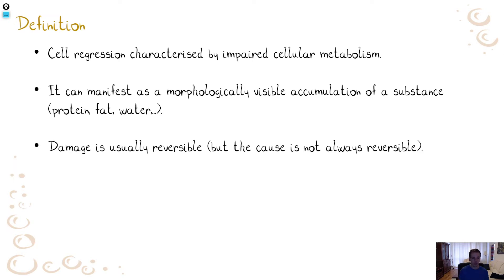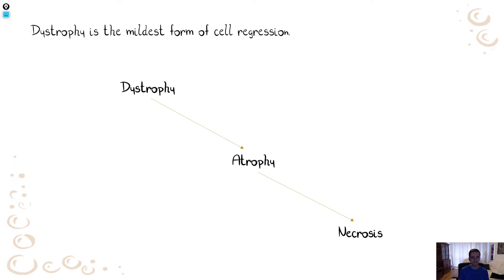Dystrophy is reversible — that is an important distinction from necrosis. However, the cause is not always reversible. For example, if you have some inborn error of metabolism, there is a congenital defect, some congenital mutation of an enzyme. So the cause is not always reversible, but the damage itself — the cell dystrophy — is usually reversible. Dystrophy is the mildest form of cell regression. If the insult is severe enough, it can subsequently progress to necrosis, which is of course irreversible.